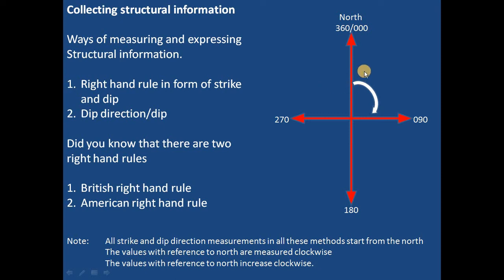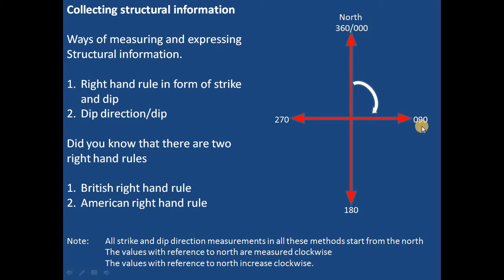For example, if I want to measure a strike, I will start from the north arrow which will be 0 and I will go clockwise and the angles will increase as I go. So it's 90, 180, 270, 360 or 0.